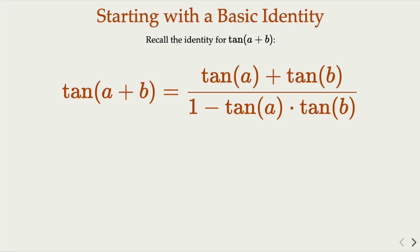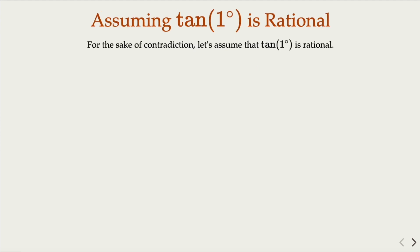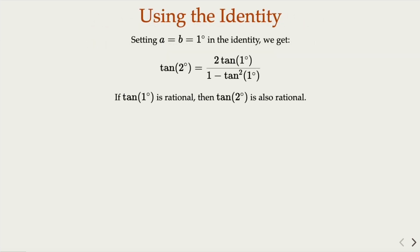Let's assume tangent of one degree is rational. One fact we know about rational numbers is that they are closed under the operations of addition, subtraction, multiplication, and division. Now here, tangent of two degrees would be, according to the rule, rational.